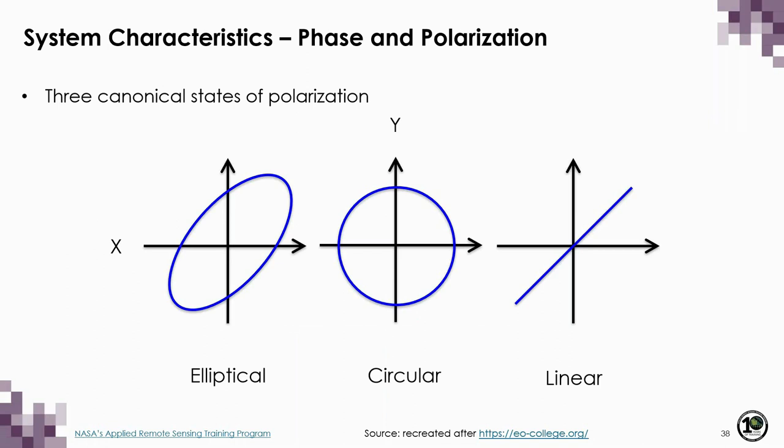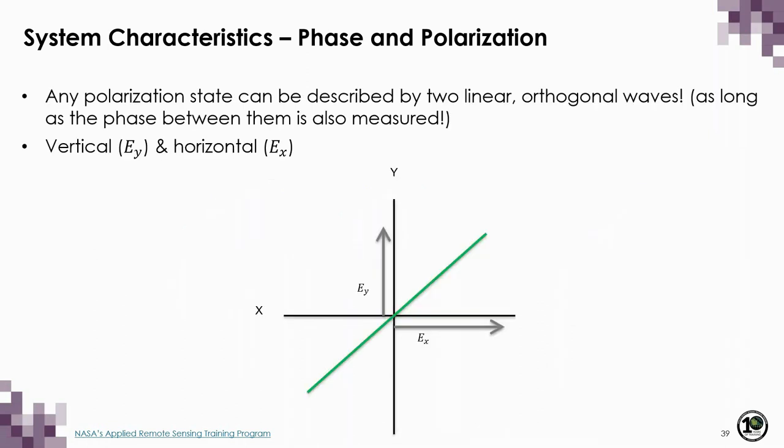Up until this point, we have only seen linearly polarized waves, but that's only one of three canonical polarization states. In addition to linear, there is also elliptical and circular polarization. Interestingly, we can describe the polarization state of any wave by fitting two orthogonal waves to the total wave cycle — by convention, one along the vertical and one along the horizontal axis.